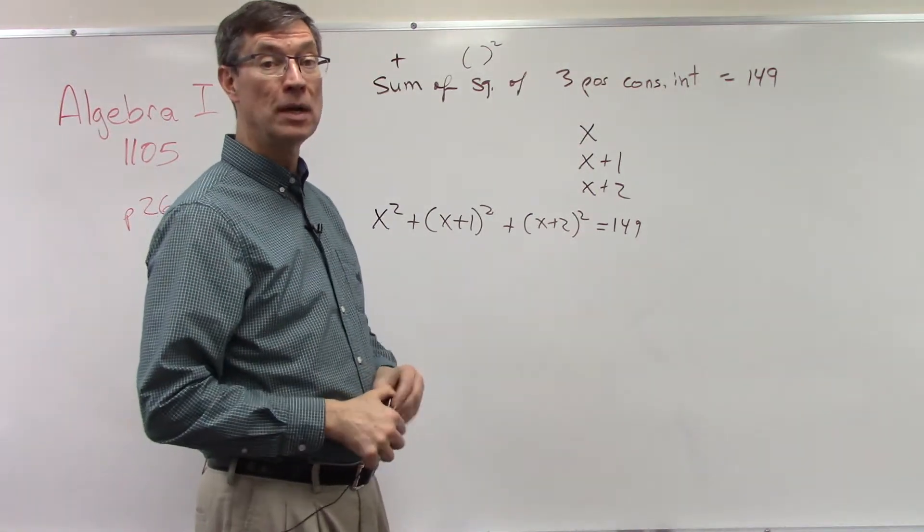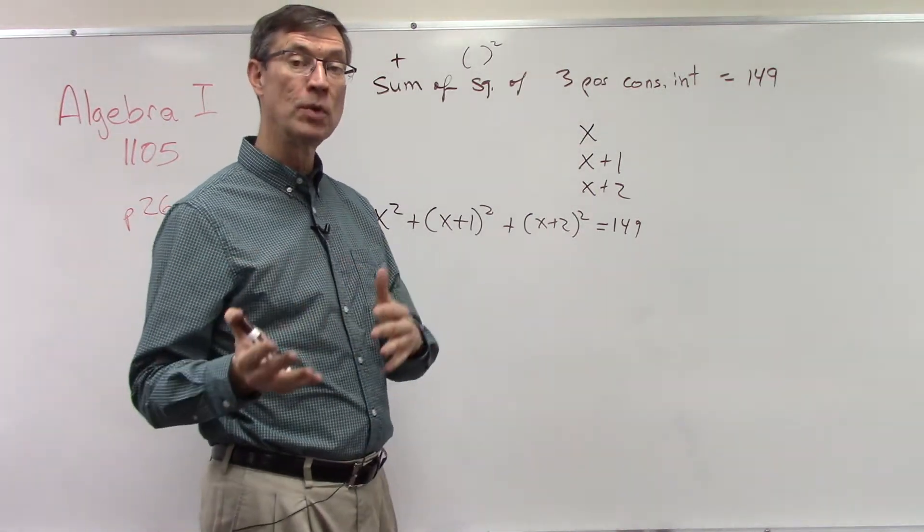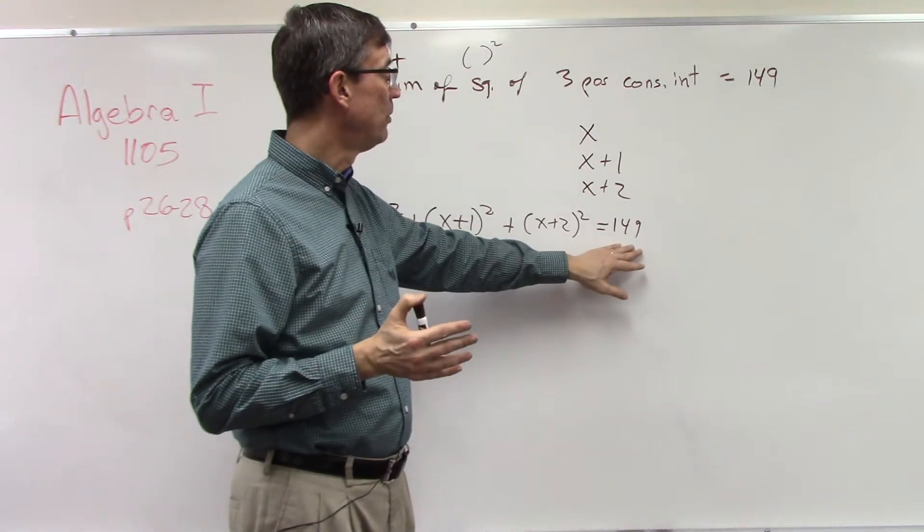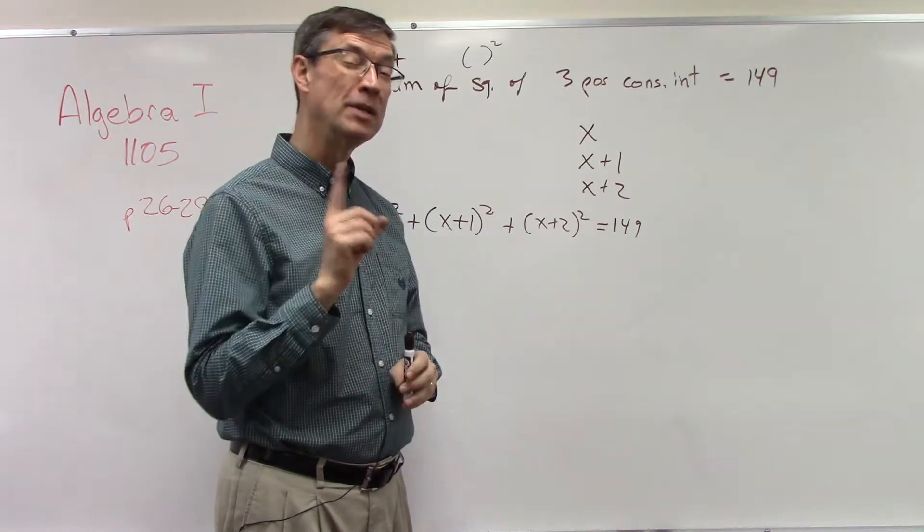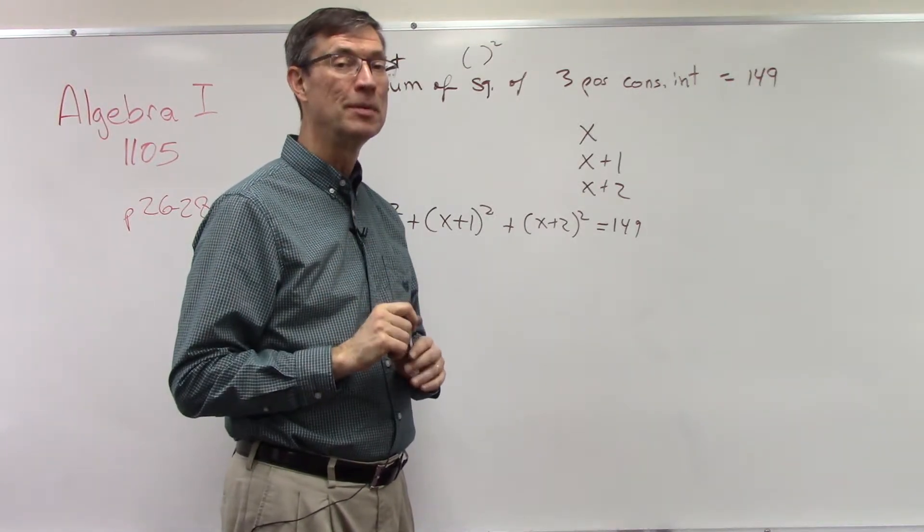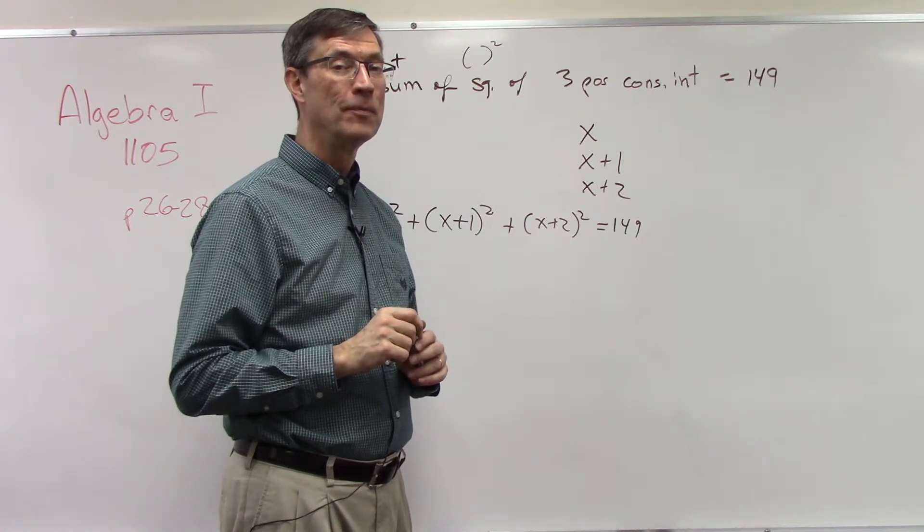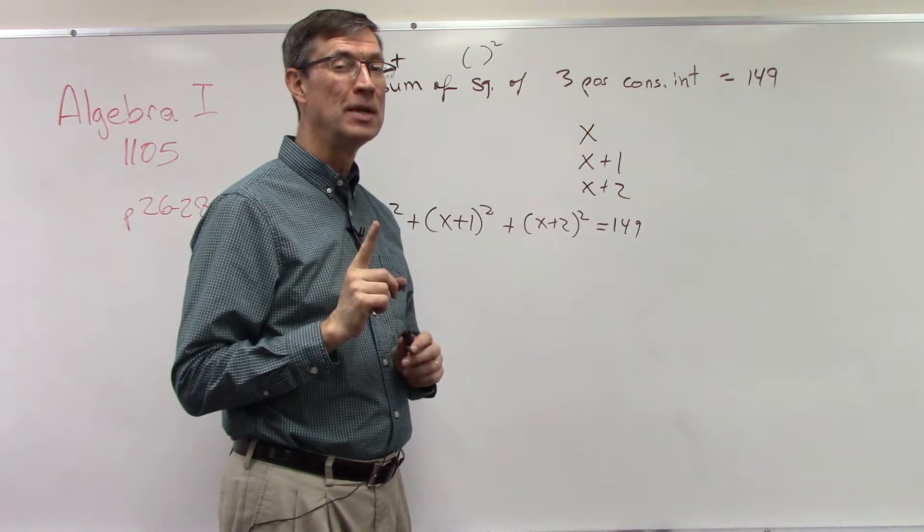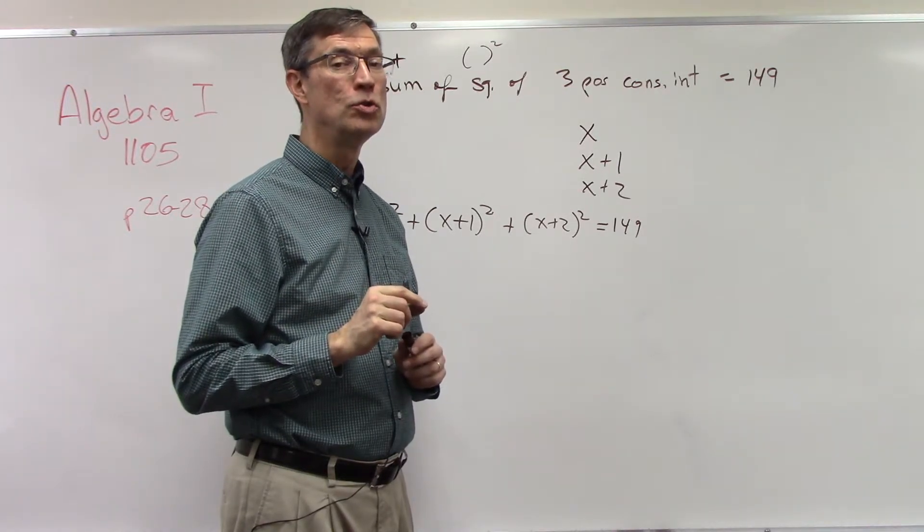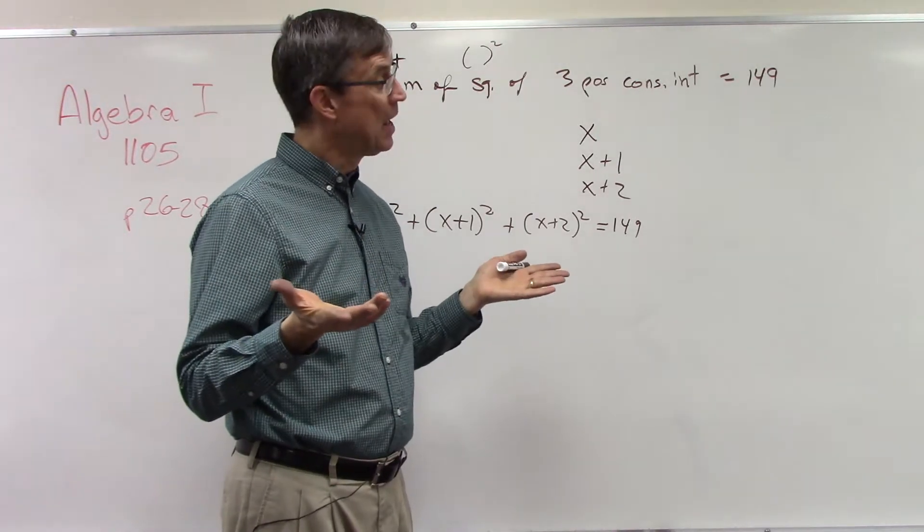And then you're gonna have something squared—that's called a quadratic equation—something squared plus something x minus a number equals 0. And you can plug into the quadratic formula, which is negative b plus or minus the square root of b squared minus 4ac, all over 2a.